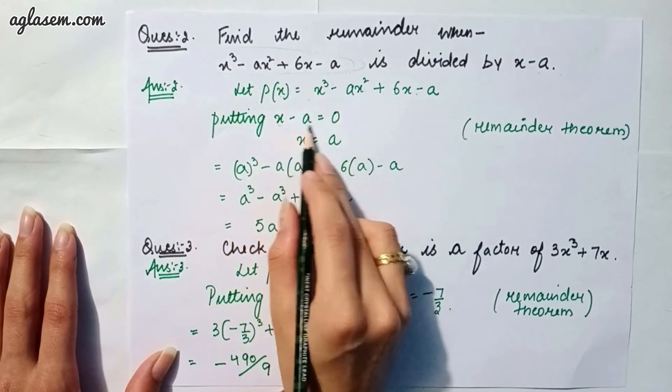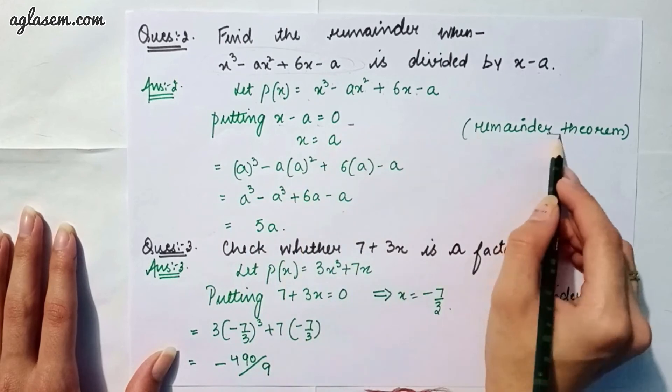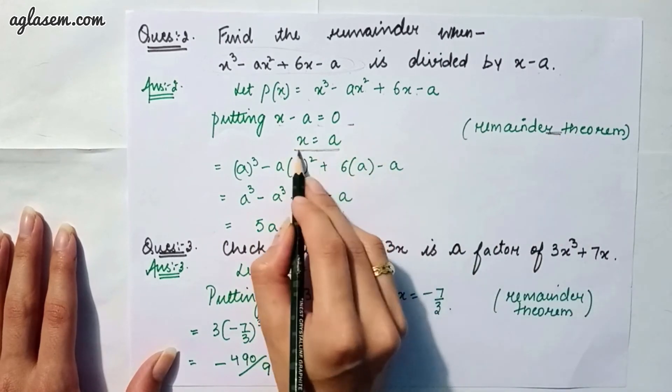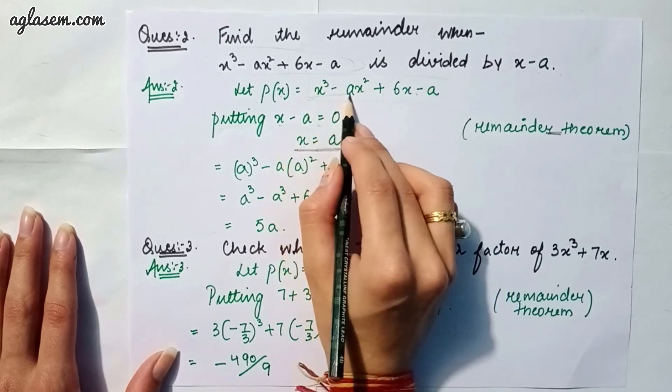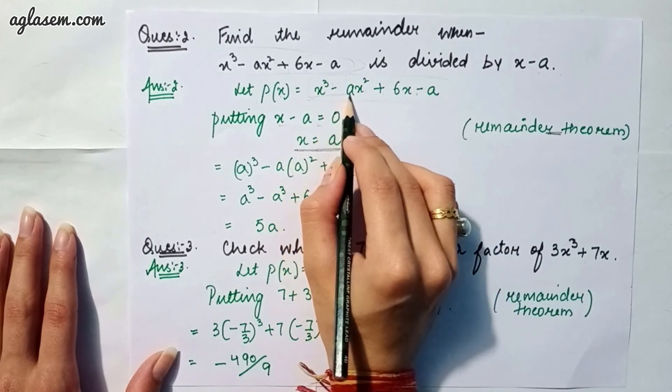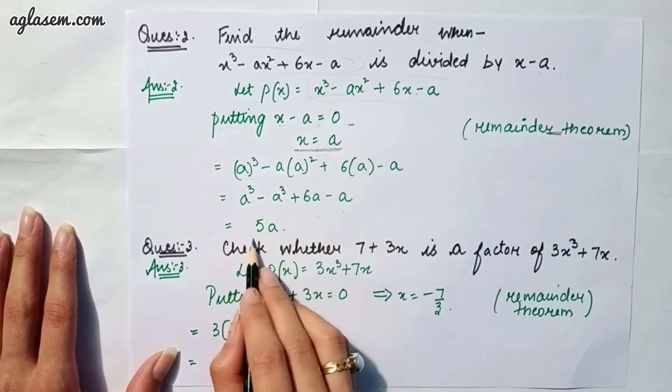Putting x - a = 0, that is, remainder theorem, we will get x as a. Now, we have to put a in this equation instead of x. So, by putting the value, we will get 5a.